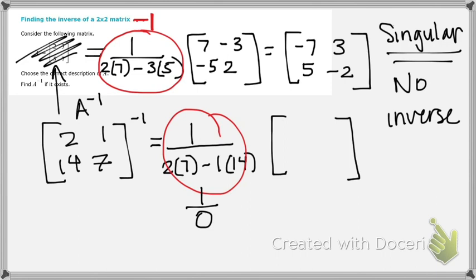We have one over zero. And what's that? That's undefined. Undefined, no inverse. And this is a singular matrix. And that's just a term that we have, a term that you want to know. That singular means it doesn't have an inverse. And it just means that in this case, at least with a two by two, that when we get one over zero, it's undefined, and so there is no inverse.